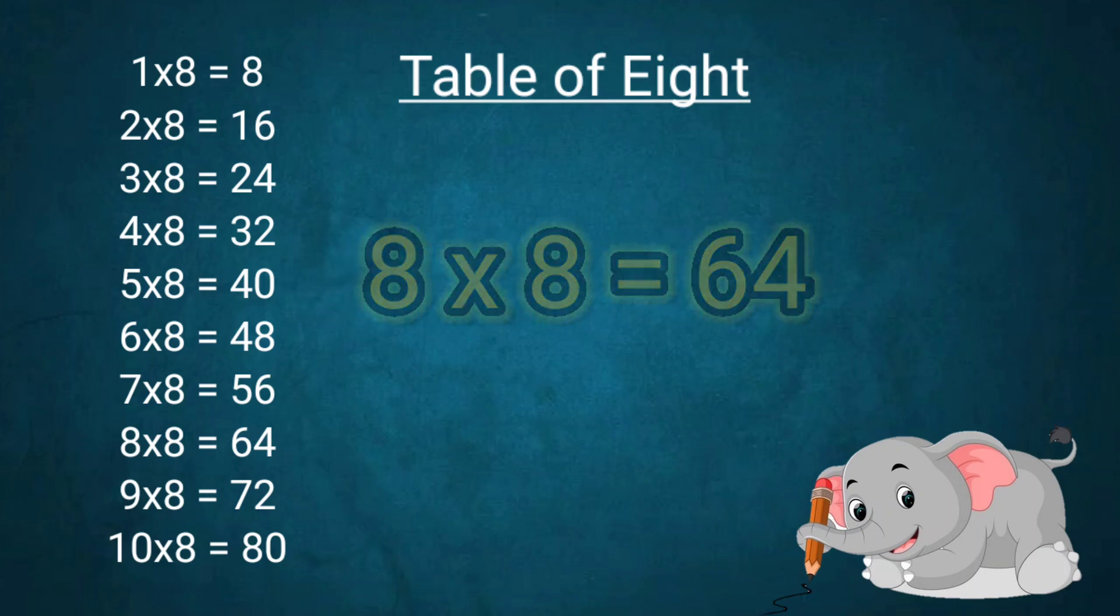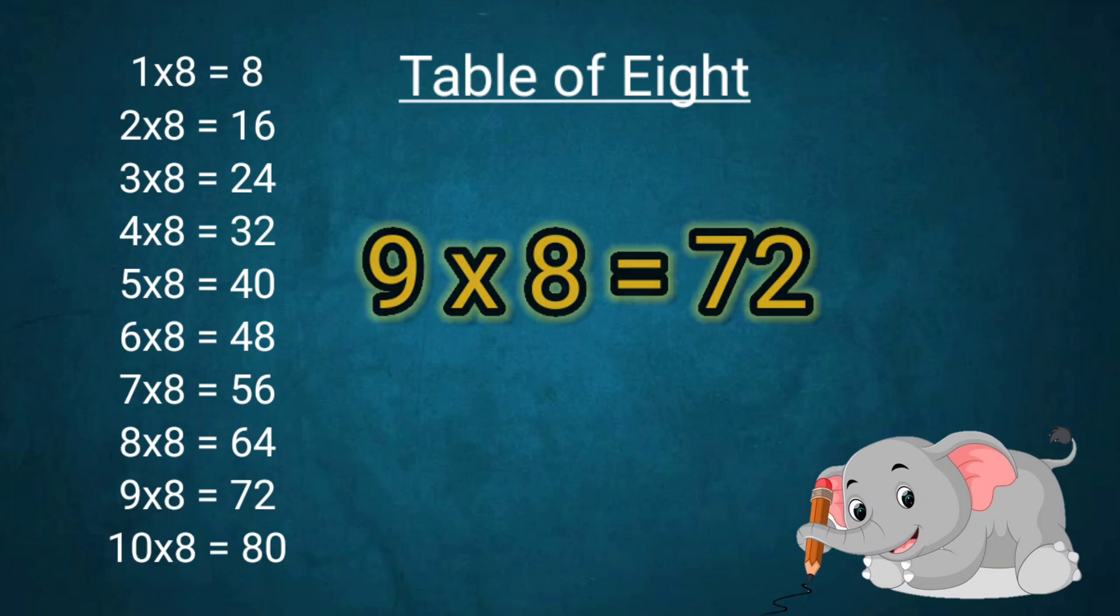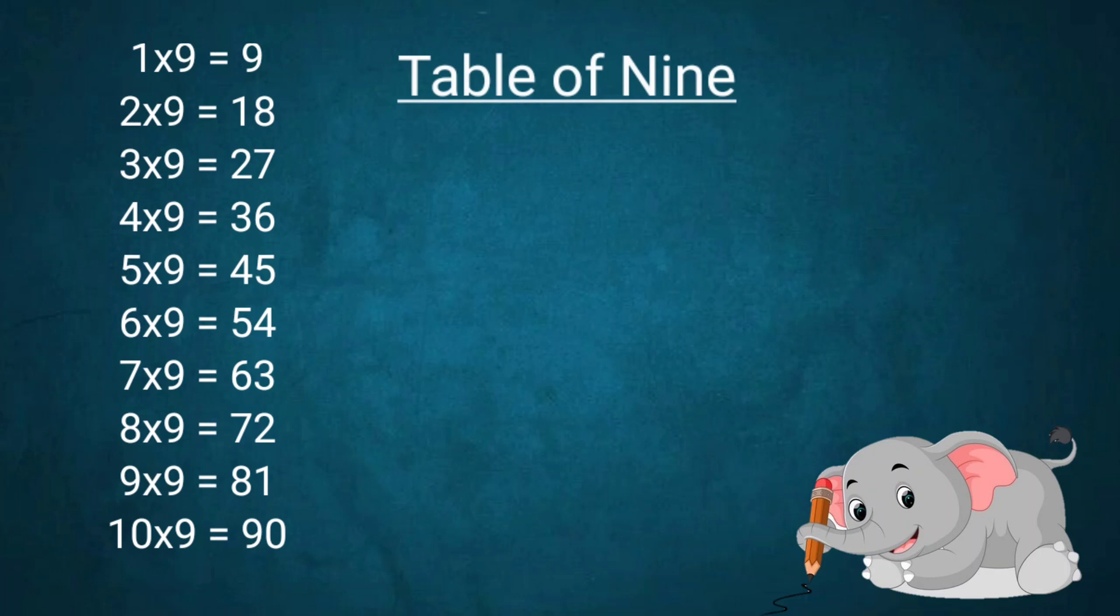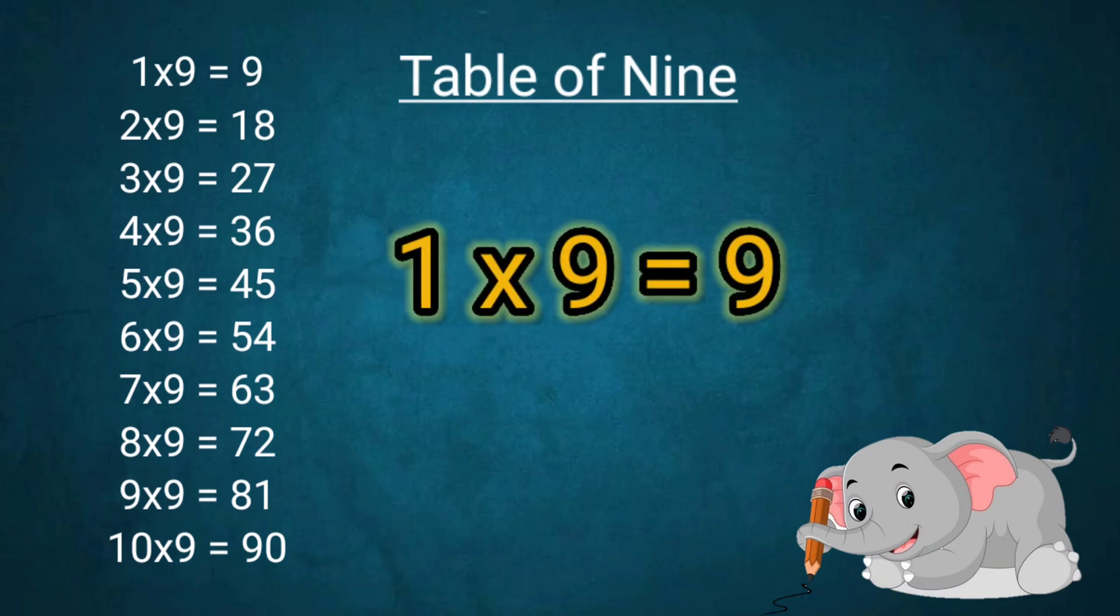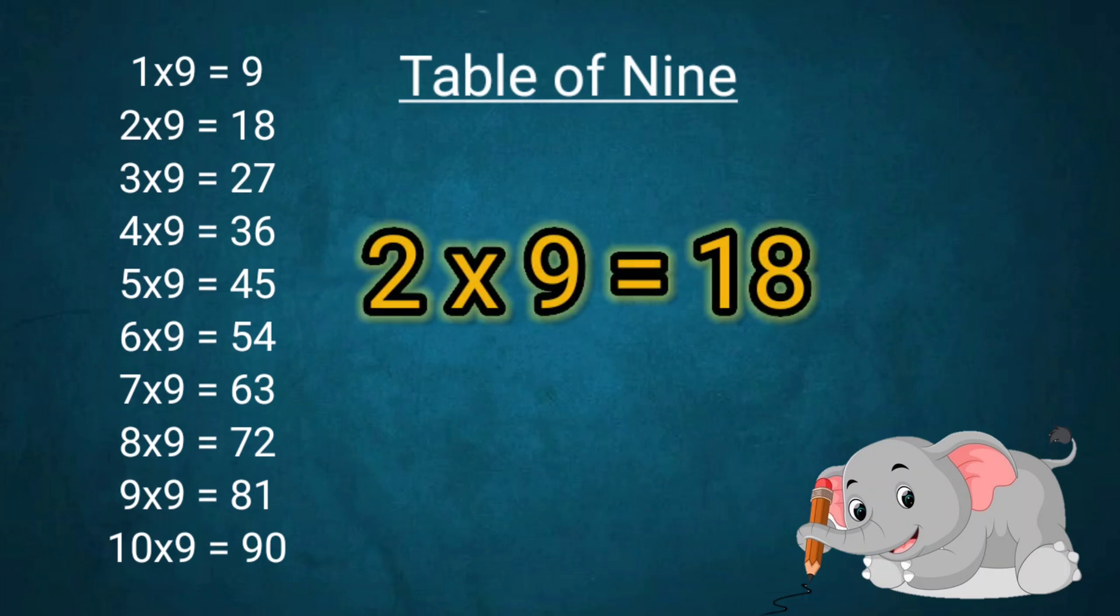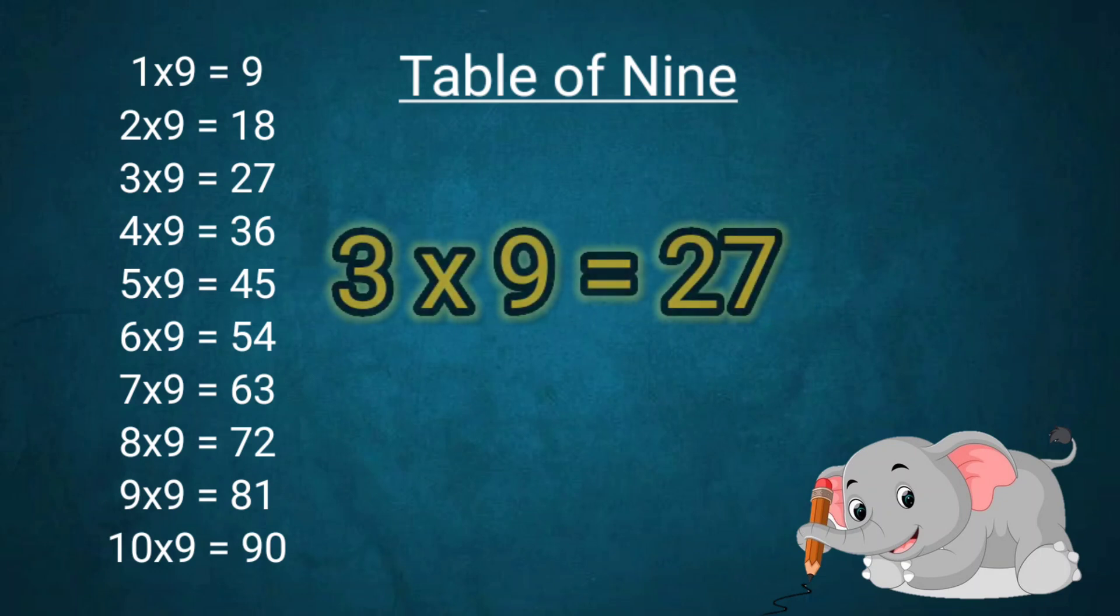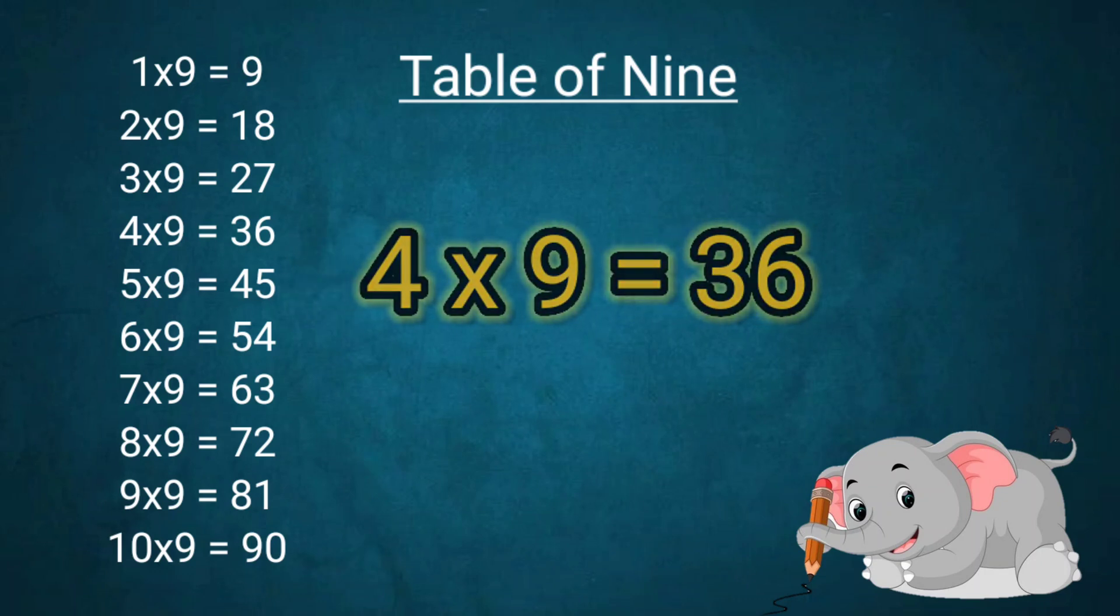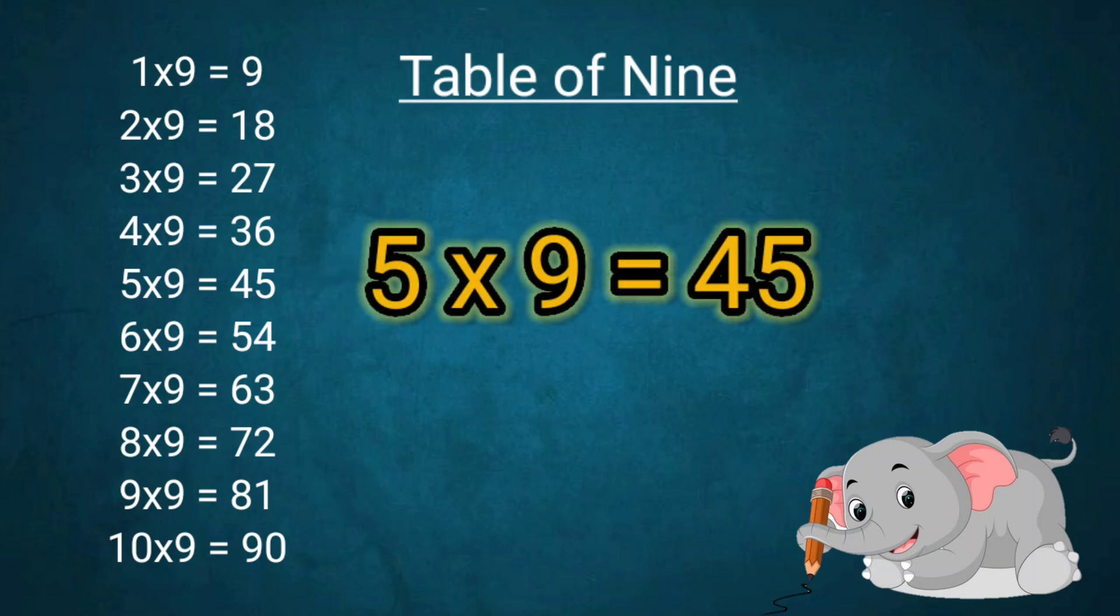8x8=64, 9x8=72, 10x8=80. Table of 9: 1x9=9, 2x9=18, 3x9=27, 4x9=36, 5x9=45.